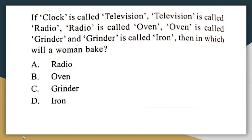Next question is on coding and decoding. If clock is called television, television is called radio, radio is called oven, oven is called grinder, and grinder is called iron — in which will a woman bake? Generally women bake in an oven, but in this code language, oven is called grinder. So a woman will bake in a grinder. The correct answer is option C.